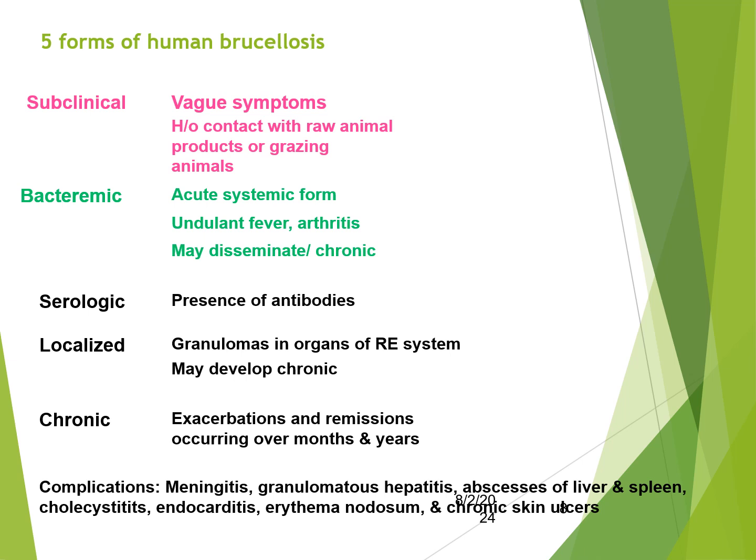There are five forms of human brucellosis: subclinical, bacteraemic, serologic, localised, and chronic. Subclinical presents with vague symptoms. Bacteraemic is an acute systemic form with undulant fever and arthritis. Serologic is defined by the presence of antibodies. Localised involves granulomas in organs of the reticuloendothelial system and may develop into the chronic form. Chronic involves exacerbations and remissions over months and years.